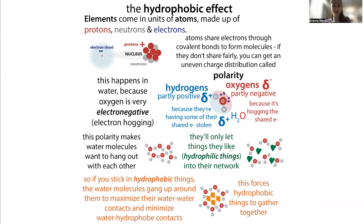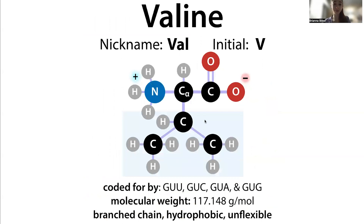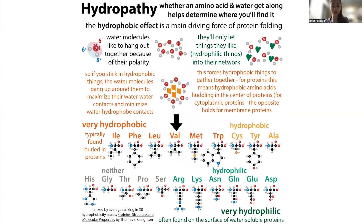You have opposite charges attract, and so water is really sticky to itself as well as to other polar or partially or fully charged things. In the case of a hydrocarbon like you have in valine, carbon and hydrogen share electrons pretty fairly, so there's not going to be that separation of charge, which makes this really unappealing to the water, and the water is going to exclude it.